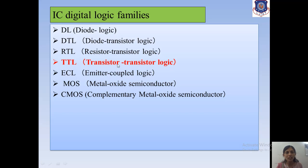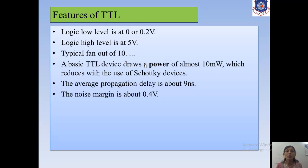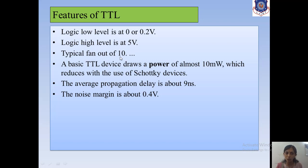Now let us look at the features of the TTL logic family. The TTL logic waveform is a square wave with two levels — low and high. The low logic level is 0 to 0.2 volts, and the high logic level is 5 volts. The typical fan-out of TTL is 10. The basic TTL device draws power of approximately 10 milliwatts. The average propagation delay is 9 nanoseconds, and the noise margin is 0.4 volts.